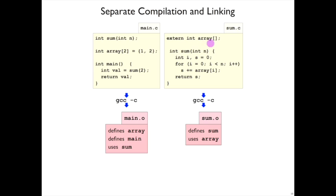Sum, meanwhile, declares that there is an array somewhere, and we'll talk a little more about that declaration form. Then it defines the function sum. So the object file in this case says that it defines sum and it uses some array variable.